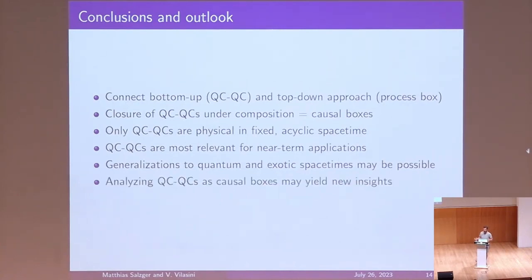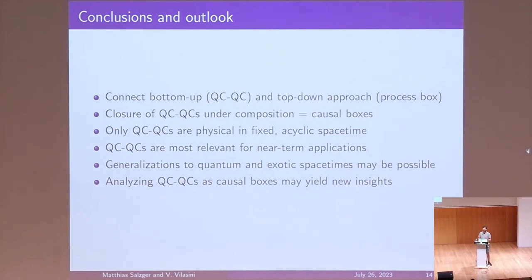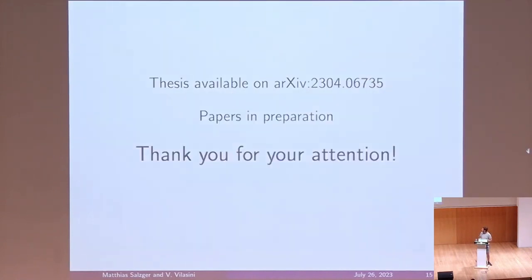Finally, this mapping gives us a new tool: we can now take QCQCs and analyze them as causal boxes. This could be interesting because causal boxes are closer to the actual experiment — the QCQC only tells us about a specific scenario, whereas the causal box tells us more about the whole setup. This could potentially yield new insights for indefinite causal order. The thesis is available, and papers are currently in preparation and should hopefully appear on the archive soon.